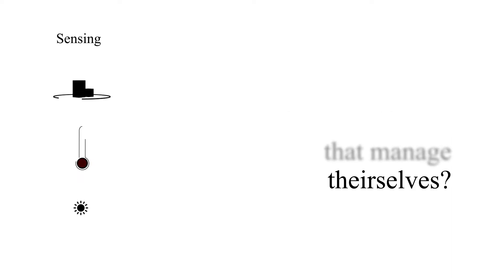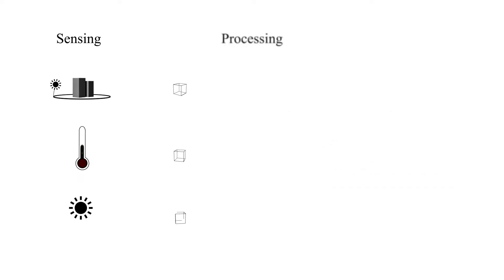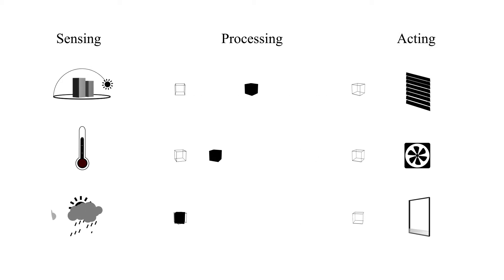In our conventional building systems, we collect data from the external climate condition by sensors. Then we process them and we act within our HVAC systems.